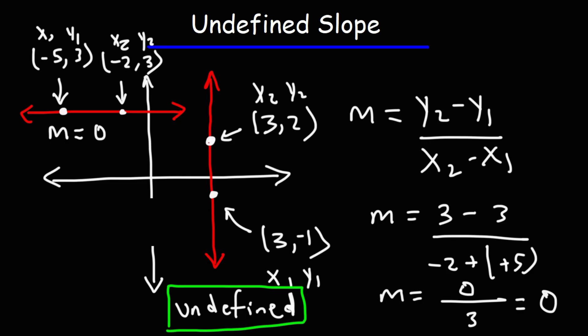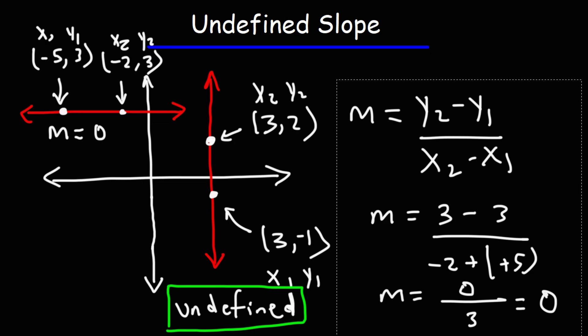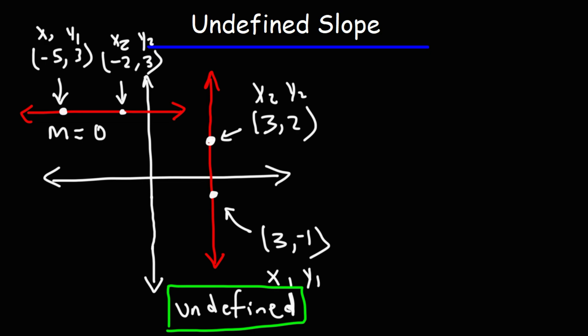Now what are the equations of these two lines — how would you describe their equations? What is the equation of the vertical line? How can we write an equation if we don't know the value of the slope? Here is the slope-intercept formula: y equals mx plus b.